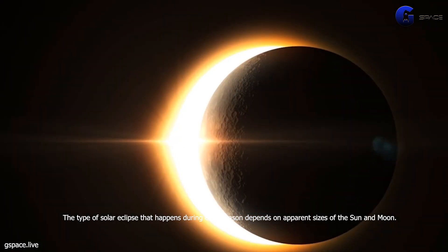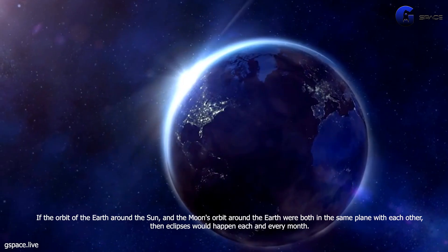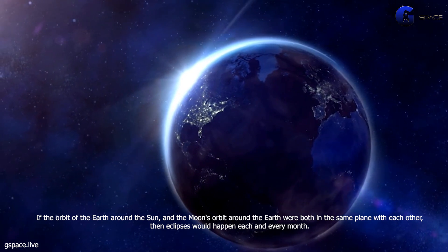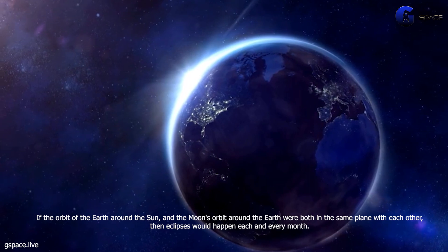The type of solar eclipse that happens during each season depends on apparent sizes of the sun and moon. If the orbit of the earth around the sun and the moon's orbit around the earth were both in the same plane with each other, then eclipses would happen each and every month.